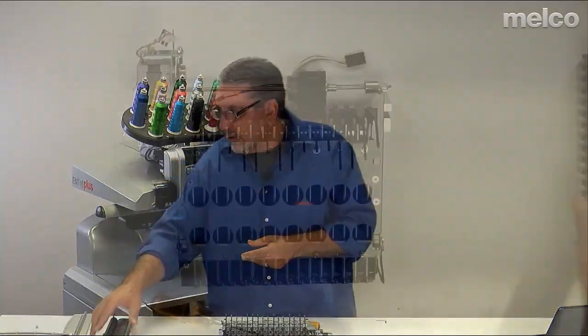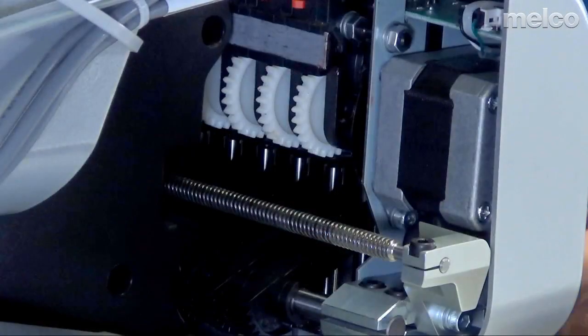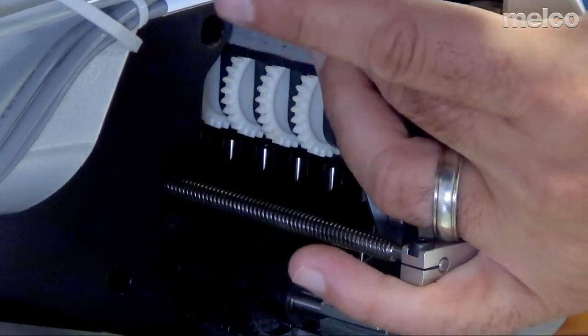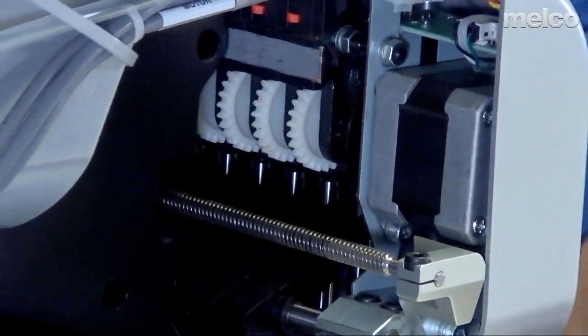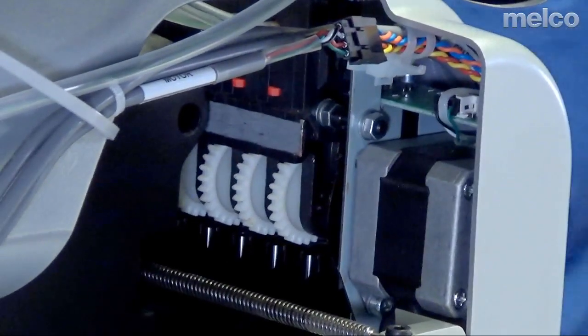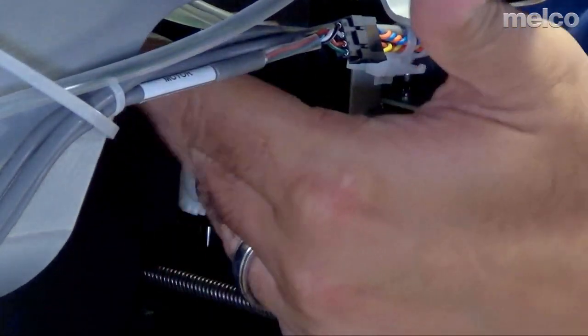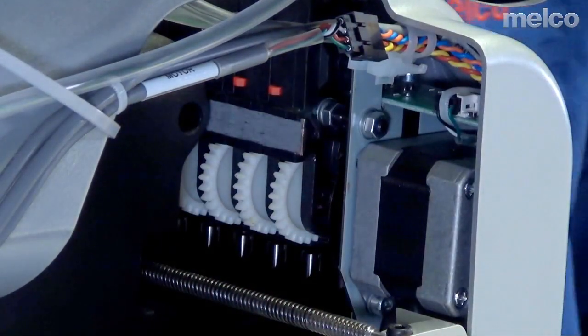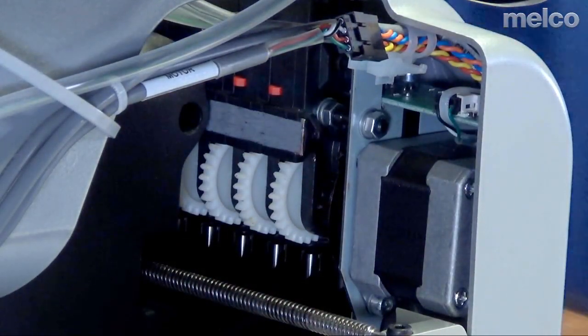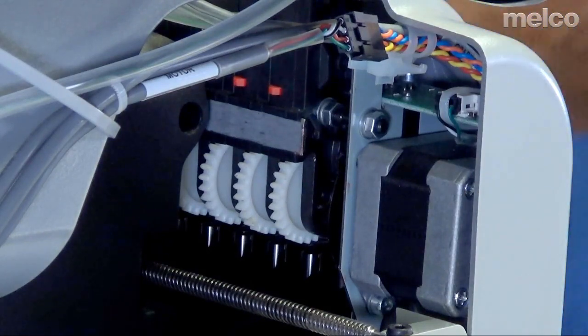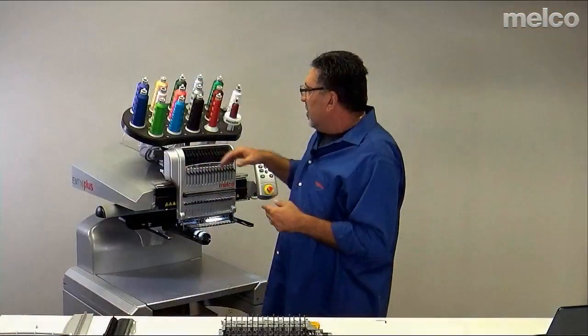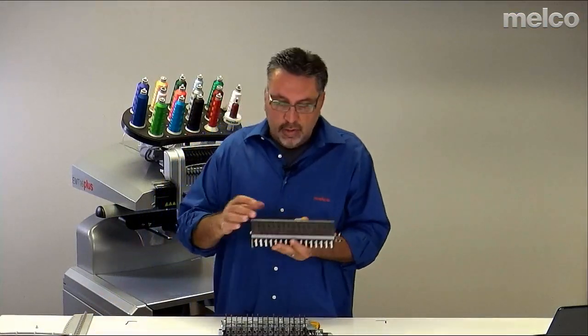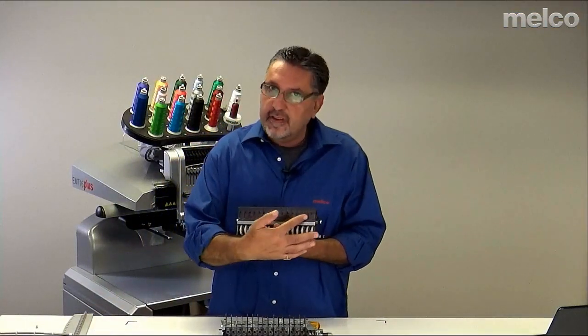If we could take a look at the back of the machine again real quick. This is where the clear tubes are plugging into the back of the thread feed assembly. What can happen is after a lot of color changes, these clear tubes can actually come dislodged from the thread feed assembly.